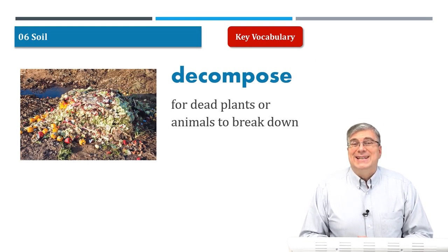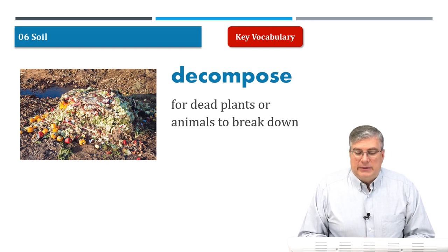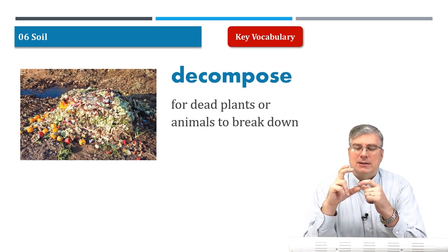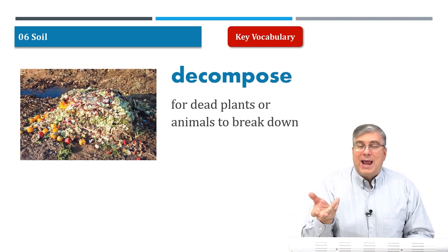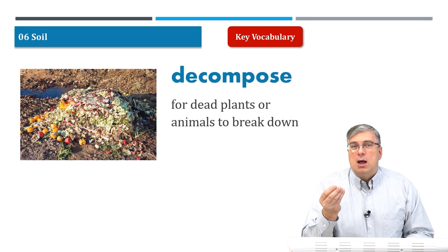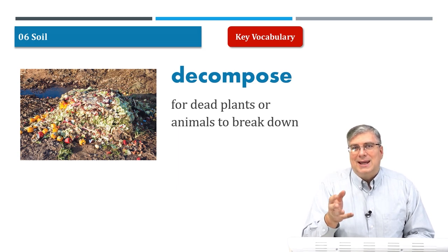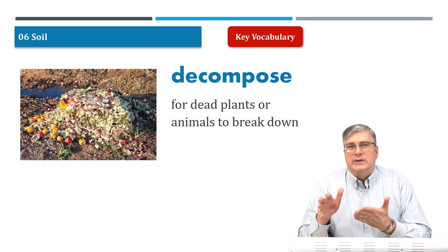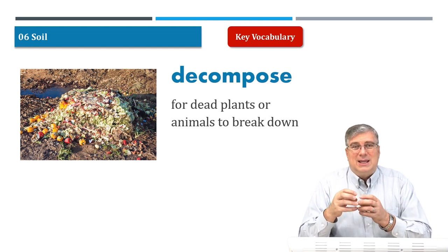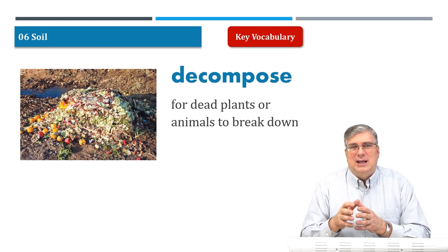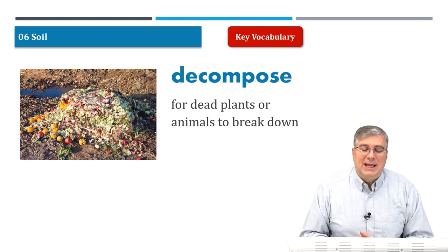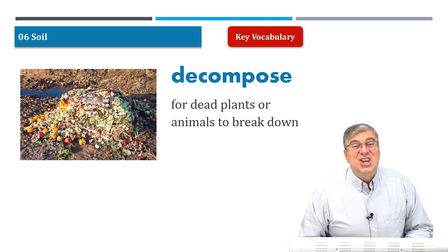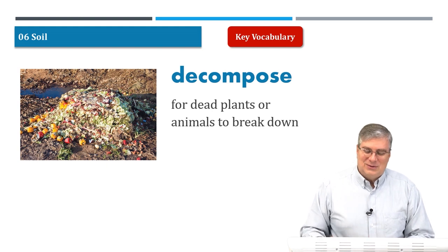Next word: decompose. When something dies, or when you eat an apple and throw away the core, what happens to it? It breaks down over time — sun, wind, rain, earth. It will rot, turn brown, turn into a liquid, and go into the ground. Decompose means dead plants or dead animals break down naturally and become part of the soil. And what do you call that? Humus — right, that's what we learned at the beginning.